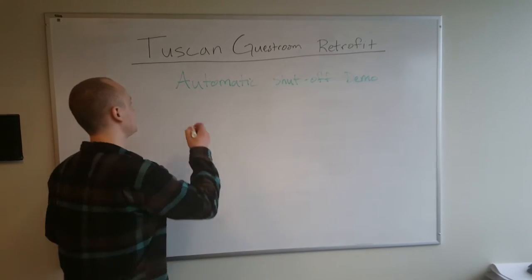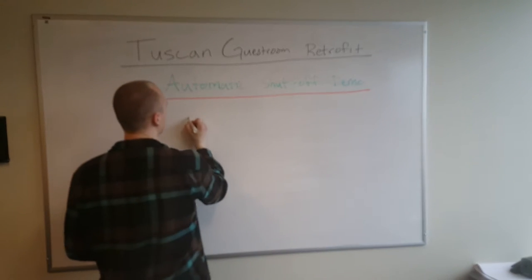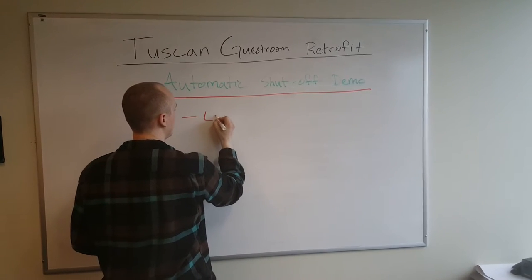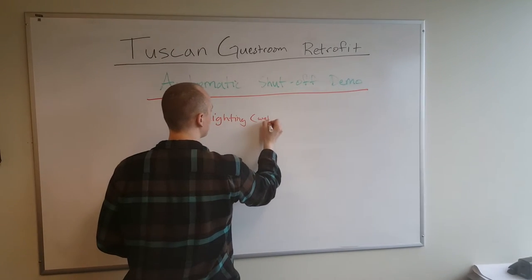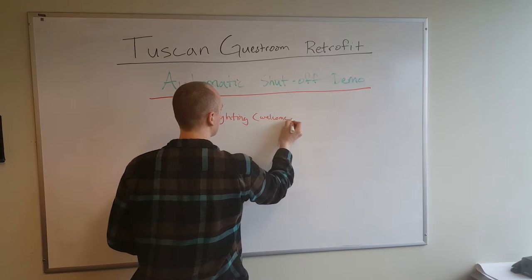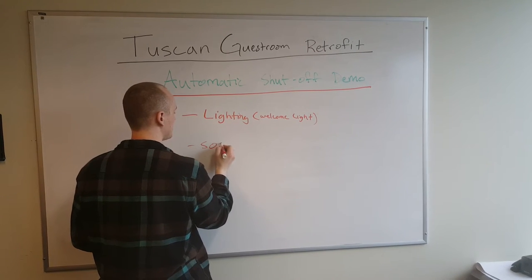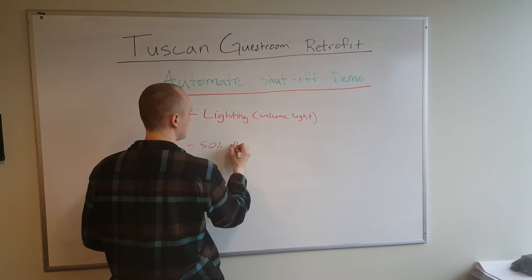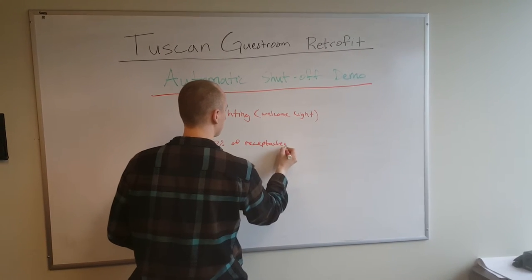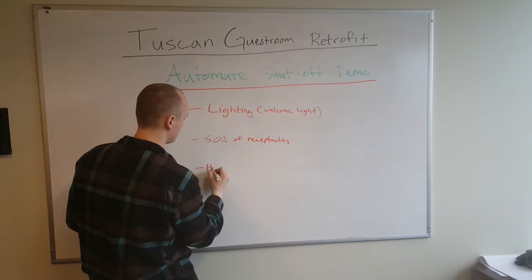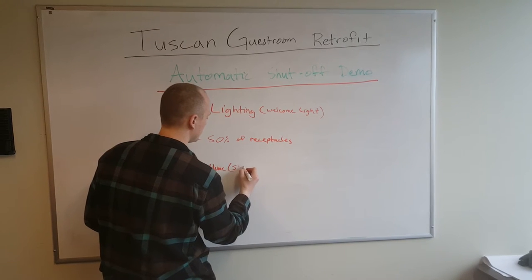The answer is because Title 24 now requires automatic shutoff of the following electrical components: all lighting except for the welcome light, 50% of receptacles, and HVAC with a 50 or 5 degree setback.